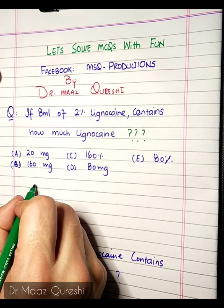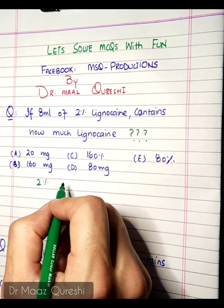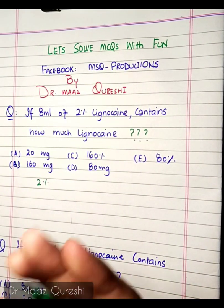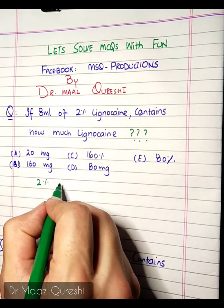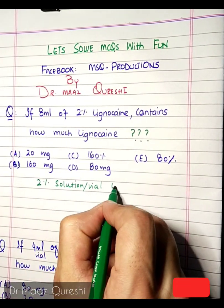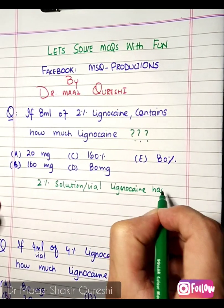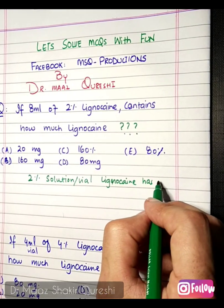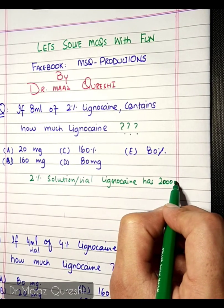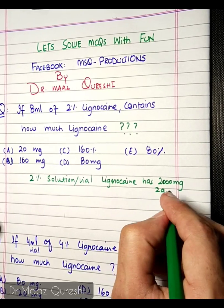Let's solve it. First, we should know how much lignocaine is in a 2% solution. A 2% solution contains 2,000mg, or 2 grams — right? That's 2 grams in 100ml.